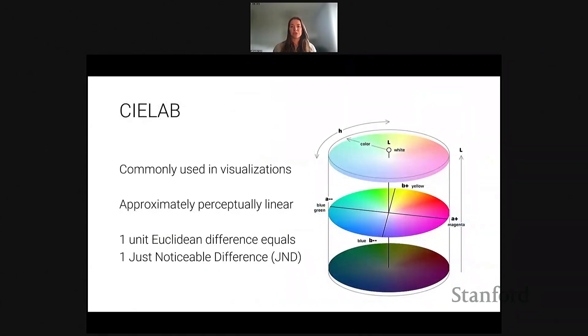To set the stage for a lot of this work, the Viz community has historically used the CIE lab color space rather than RGB as a way to map color to data. Lab consists of three axes that essentially mimic the cells in the eye. We can use lab for Viz as unlike RGB, it's what we call approximately perceptually linear. That is one unit of Euclidean distance approximately corresponds to one 50% just noticeable difference or JND, which is the smallest difference that people can reliably distinguish at a rate greater than chance.